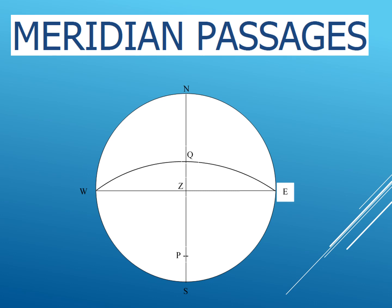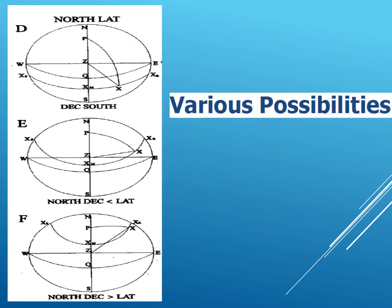Each point on this circle is 90 degrees away from the observer's zenith Z. Now, the celestial body will rise from the east and set on the west, and it has a transition — a passage. During that passage, when the celestial body is exactly in line with Z, or the vertical line passing through the observer's zenith, that is the point of the meridian passage.